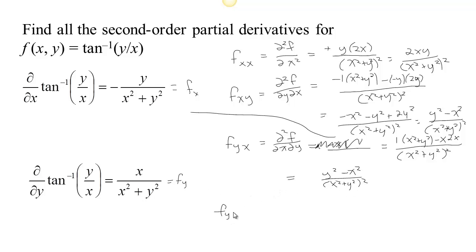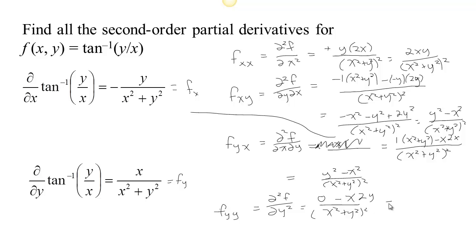For f sub yy, we start with f sub y and take the derivative with respect to y again, holding x constant. The derivative of the top with respect to y is 0, minus the top (x) times the derivative of the bottom with respect to y (2y), all over x squared plus y squared squared. So we get negative 2xy over x squared plus y squared squared.